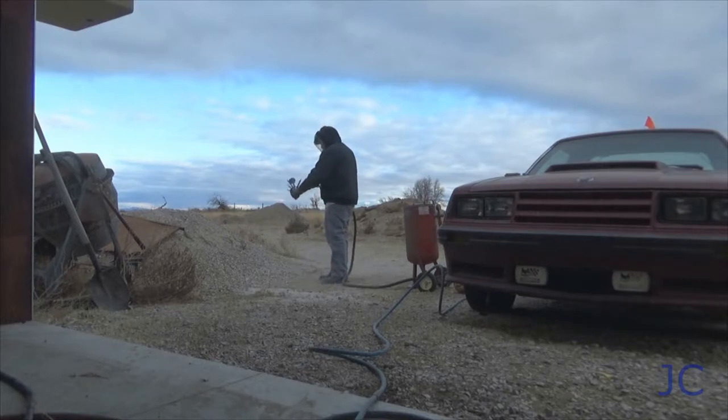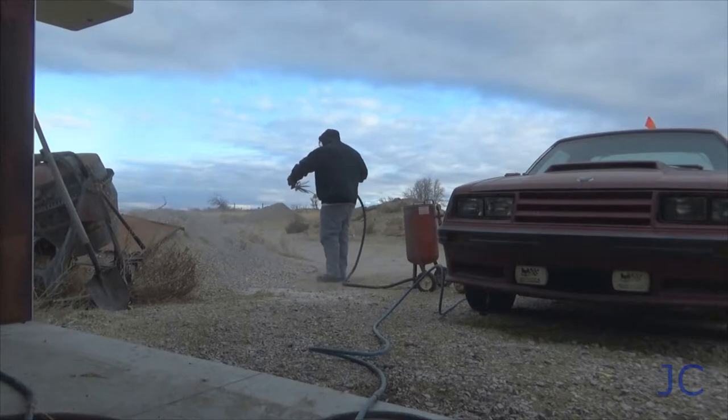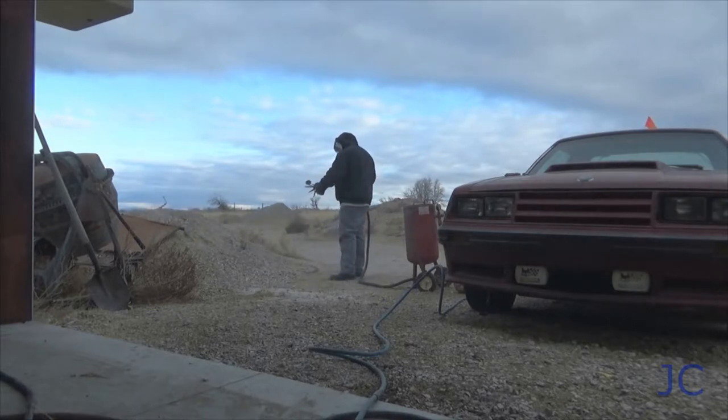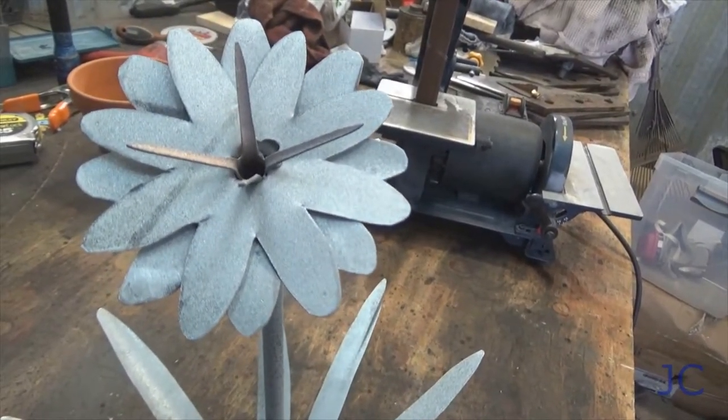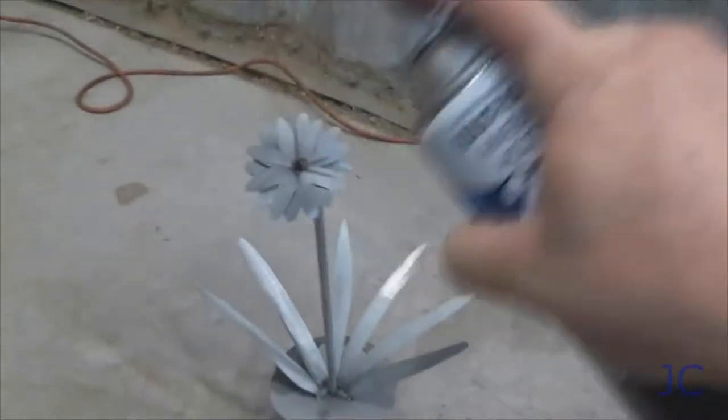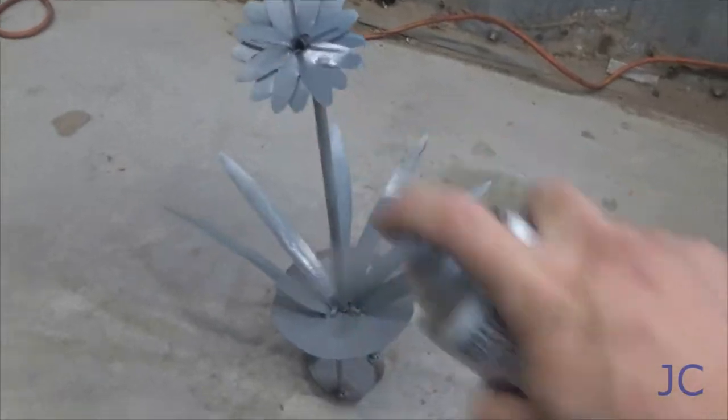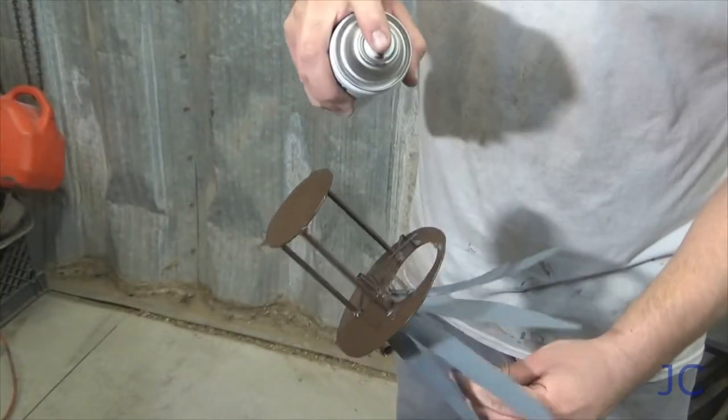I sandblasted my flower. You can hand sand them or however you need to to make sure the paint sticks. You just want to do something to make sure that you've got any old paint or oxidation off of your project. After you've sanded your flower, you want to wash it off with some kind of a solvent to get the dust off. Use a good primer on it and you can paint your flower whatever color makes your heart content.